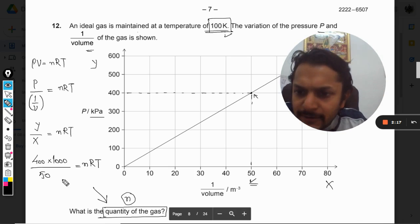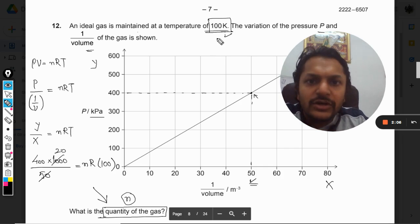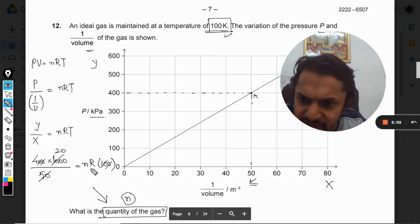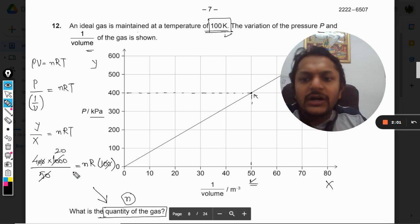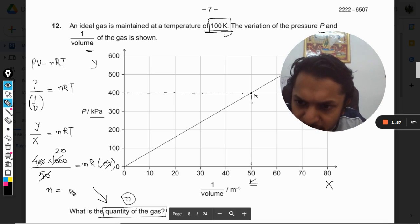On calculating this, I can substitute 100 for T in Kelvin. This 100 can get cancelled out with that, so it will be 80. And R will become reciprocal because it will be cross multiplied. So for n it will be 80 divided by R.